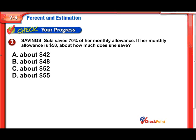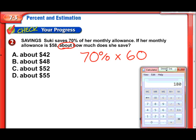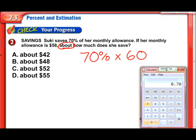Suki saves 70% of her monthly allowance. If her monthly allowance is $58, about how much does she save? 70% is already a nice round number. Let's round $58 to $60. That word 'about' tells us we're allowed to estimate. So: 0.70 times 60 equals $42. She saves about $42 per month.